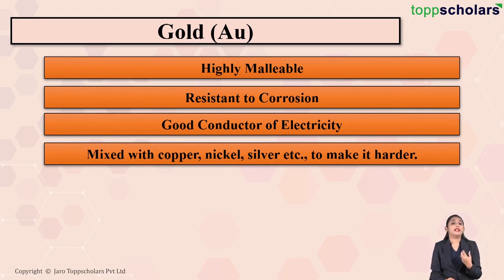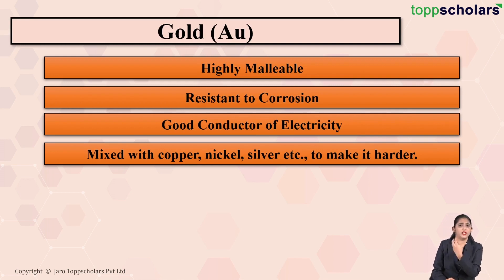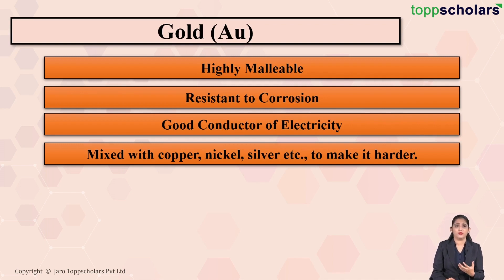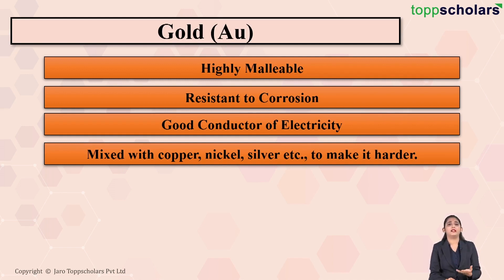If you mix some amount of copper, nickel, or silver with gold, it results in the hardening of gold. Since pure gold is very soft, it cannot be directly used for making ornaments and various articles. That is why metals like copper, nickel, and silver are added to pure gold to make it harder. Generally in India, 22 carat gold is used — 22 carat means 22 parts of gold and 2 parts of the remaining metal.